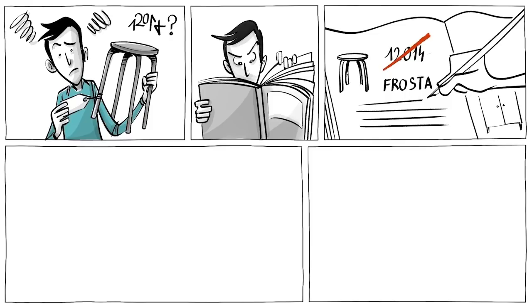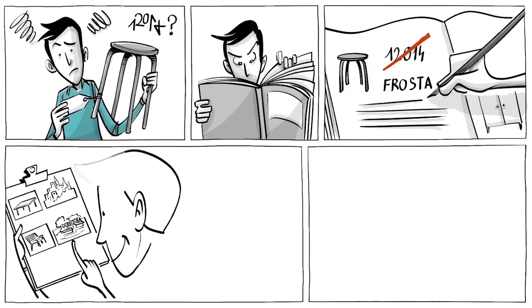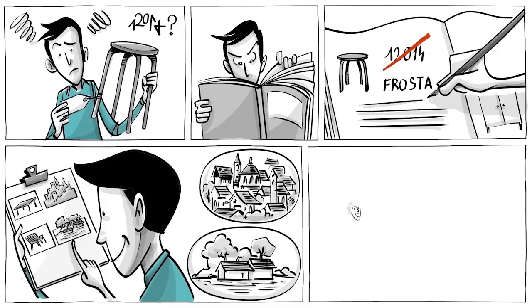Expanding his line of furniture, Ingvar soon had trouble dealing with the product codes. To help him overcome his weakness, he created a system where he, instead of numbers, gave names to each object. Tables were named after places, garden chairs after islands.